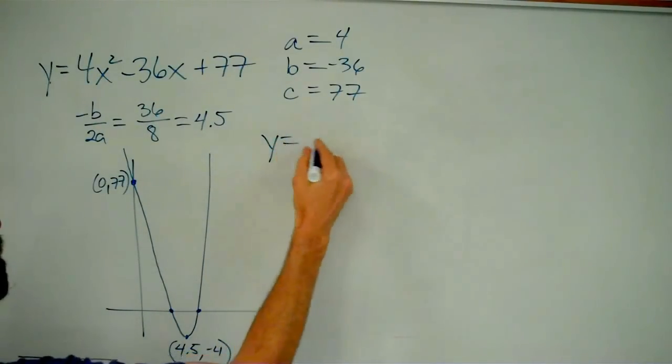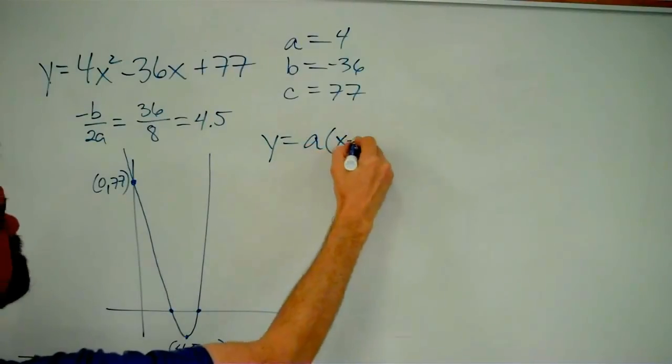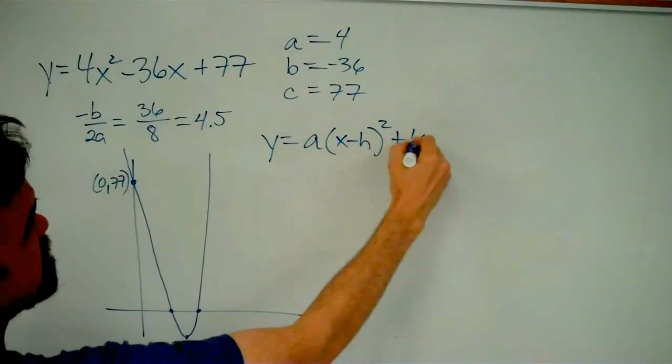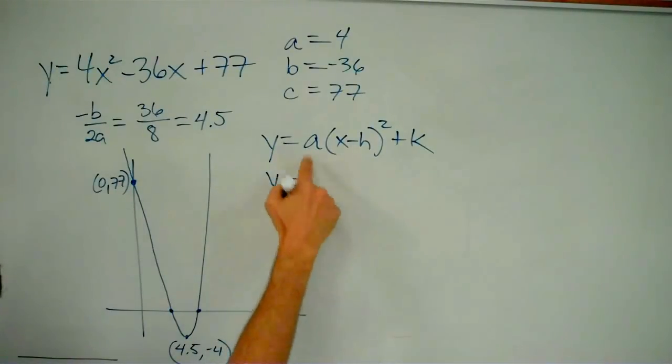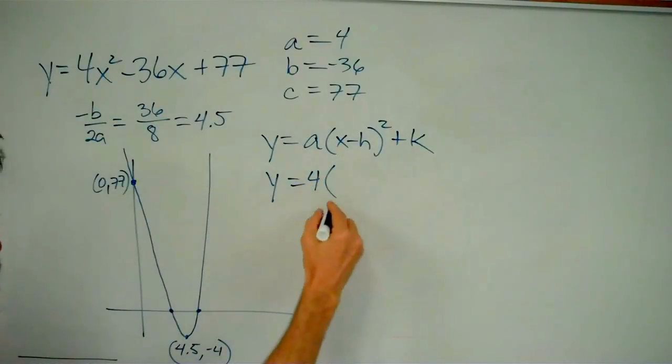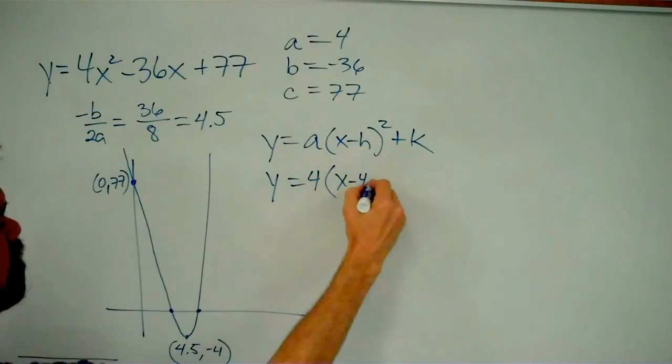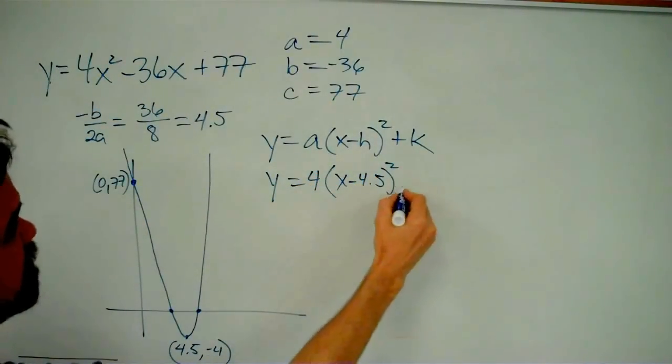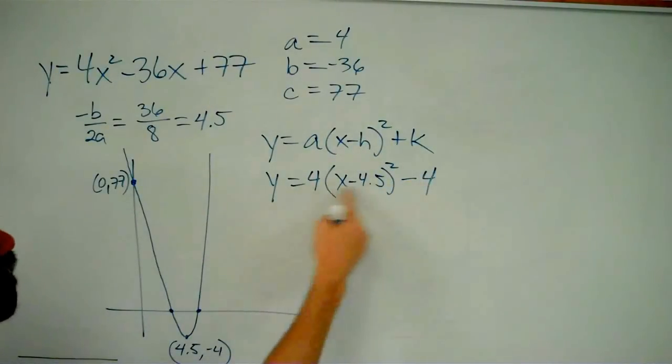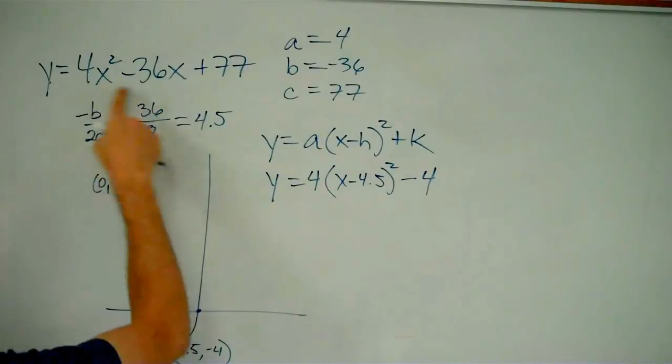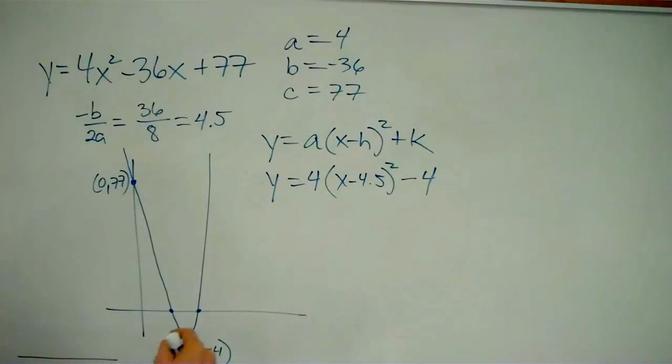Vertex form is y equals a times x minus h squared plus k. I know what h and k are. They're the coordinates of my vertex. So that means I have y equals a, that's the same thing I have there, 4 times x minus 4.5 squared plus negative 4, or minus 4. If you multiply this out, you will get that. Believe me, you will.